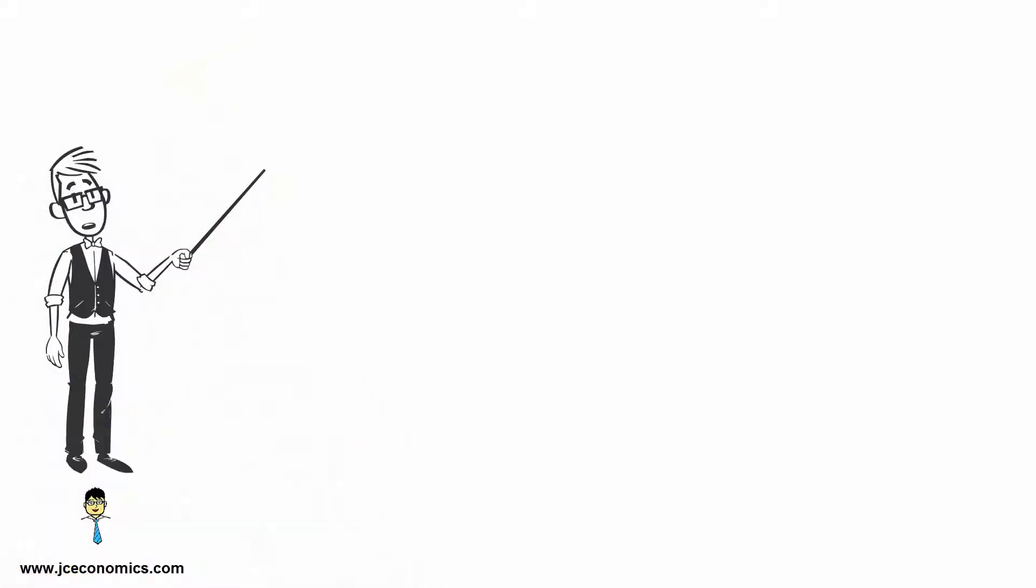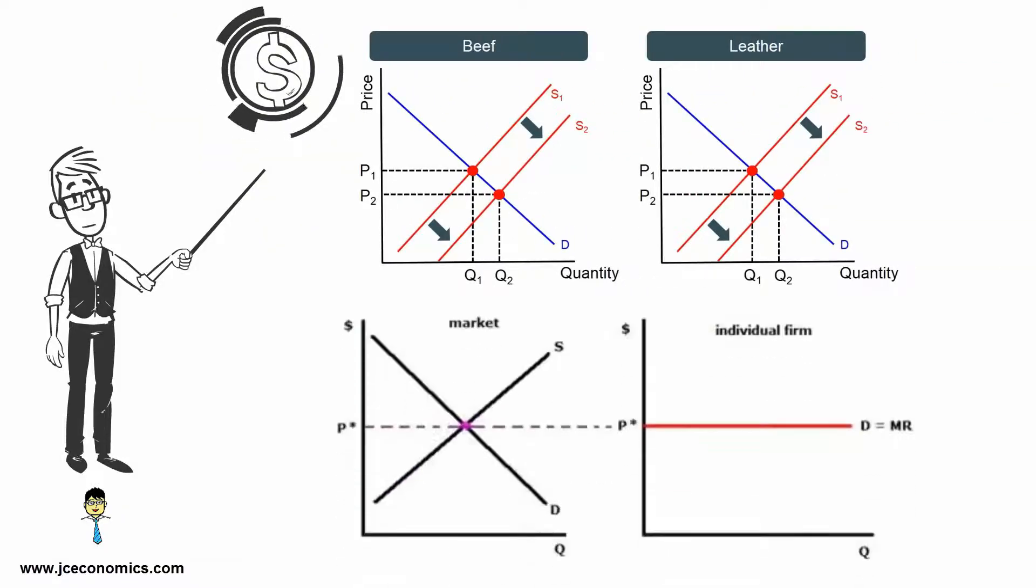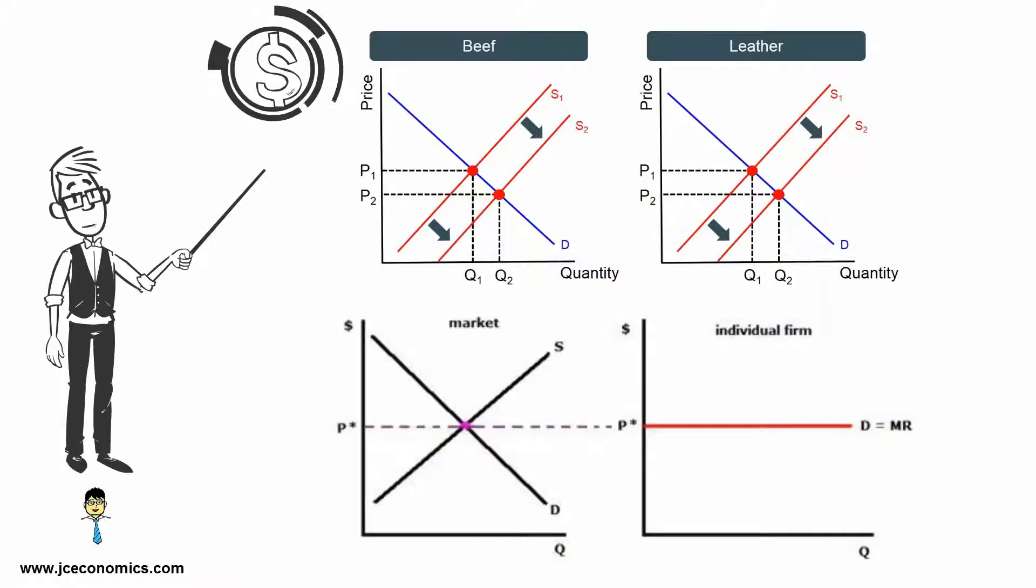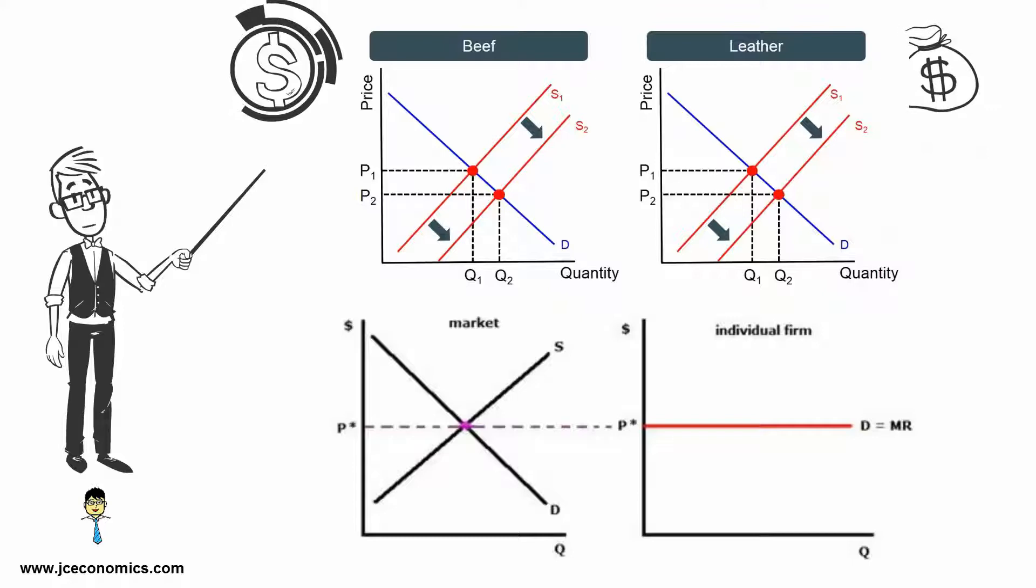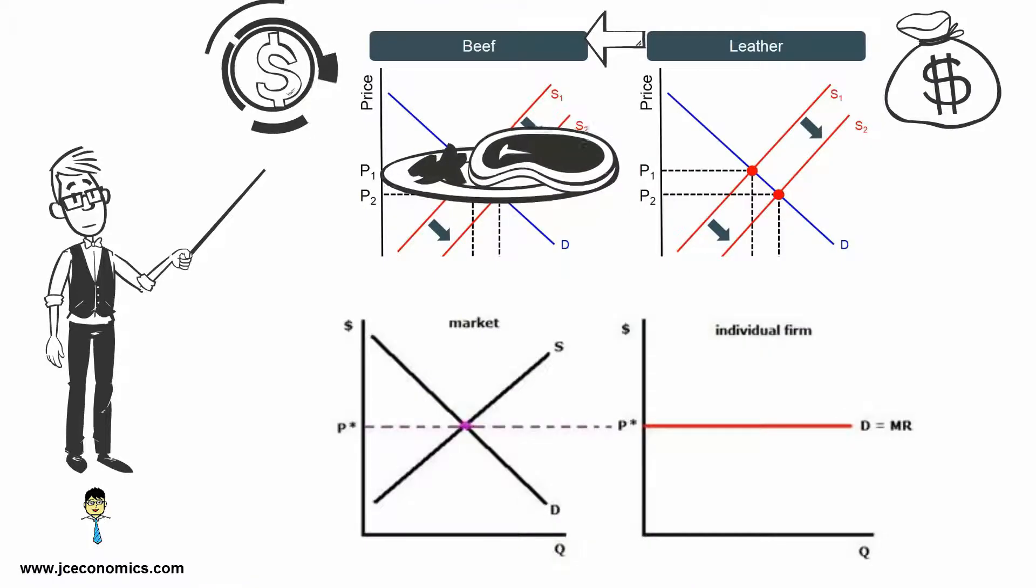Next, the changes in prices of related goods, such as goods in joint supply or in competitive supply, have varying effects on the level of supply. For instance, the increase in the price of leather increases its quantity supplied. Since leather and beef are in joint supply, there is also an increase in supply of beef.